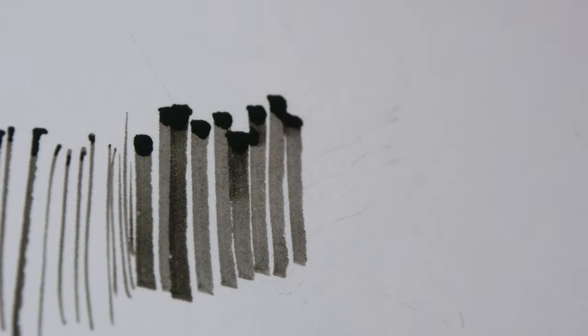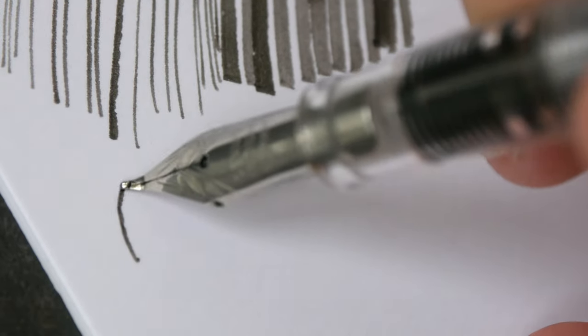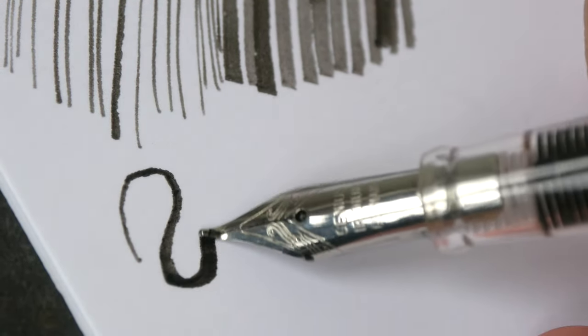To get thicker lines, you just have to tilt the pen downwards, and now you can get thick lines very easily. You can get thin and thick lines in a single stroke as well.